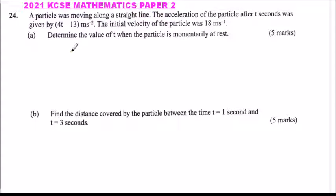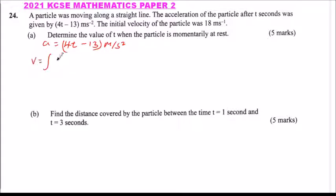When a particle is momentarily at rest, it means velocity is equal to zero. We have the acceleration equal to 40 minus 13t meters per second squared. For us to get velocity, we integrate. So velocity is equal to the integral of 40 minus 13t with respect to dt.